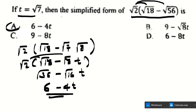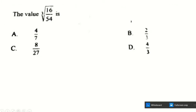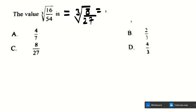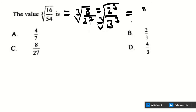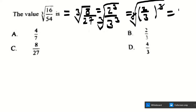The second question is cube root of 16 over 54. We simplify the fraction by dividing by 2: 16 divided by 2 is 8, and 54 divided by 2 is 27. Now 8 is 2 cubed and 27 is 3 cubed, so this becomes cube root of 2 cubed over 3 cubed, which equals cube root of (2/3) cubed. The cube and cube root cancel, giving 2 over 3. The answer is found at B.